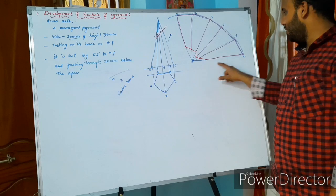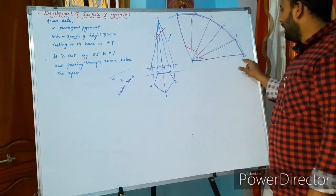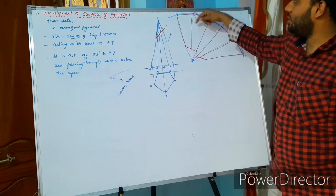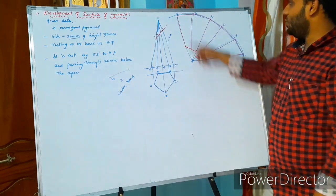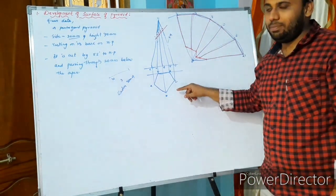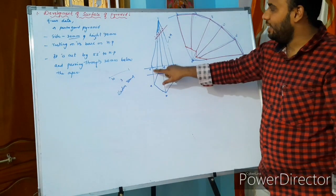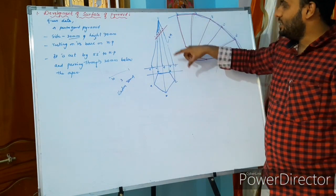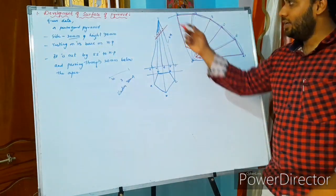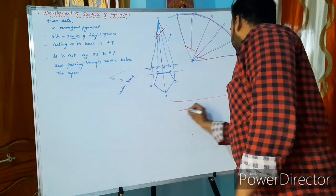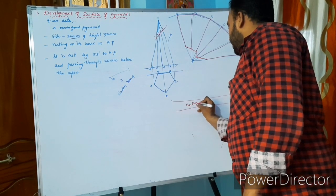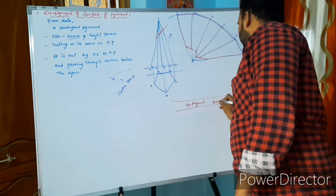Then taking A to 1, similarly cutting arcs and joining. This method is development of surface. Indicate the name here: what is that? Pentagonal pyramid.